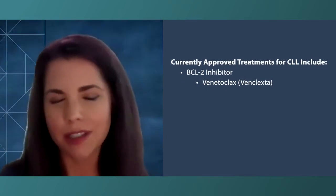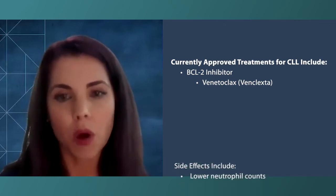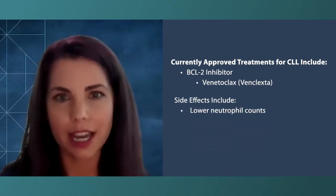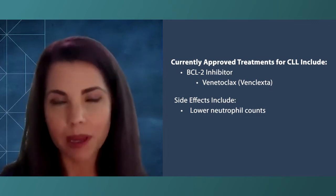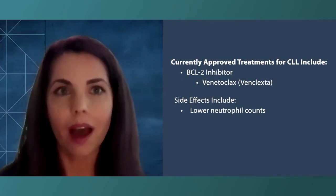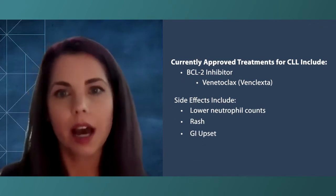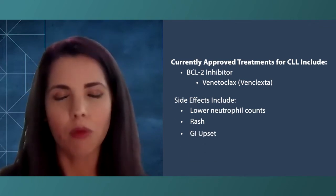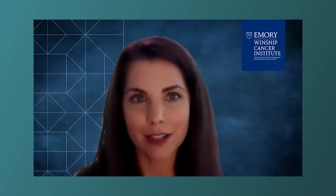In terms of venetoclax side effects, we have a slightly different profile. This agent is much more likely to cause lower cell counts, especially in the white blood cell count known as the neutrophil count, so your doctor will be monitoring you for that. It can also cause a rash and some GI upset. These are usually relatively easily managed, but we want patients on venetoclax to talk to their doctor about these side effects.